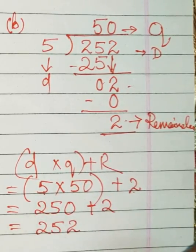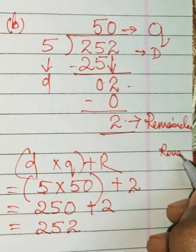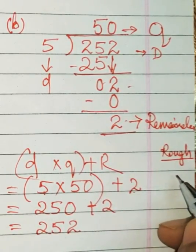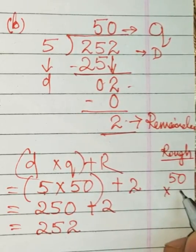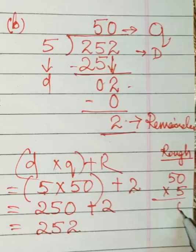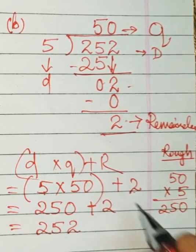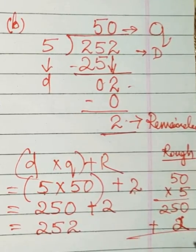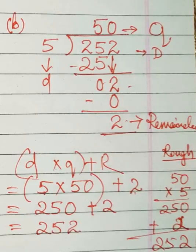So 250 plus 2 is 252. This is 252. I have done it without rough work; you can go for rough work. I will tell you later on how to do this in your copy. 50 into 5: 5 zeros are 0, 5 fives are 25, then add the remainder 2, that is 252. This is all about solving such a question. Mark it as important.